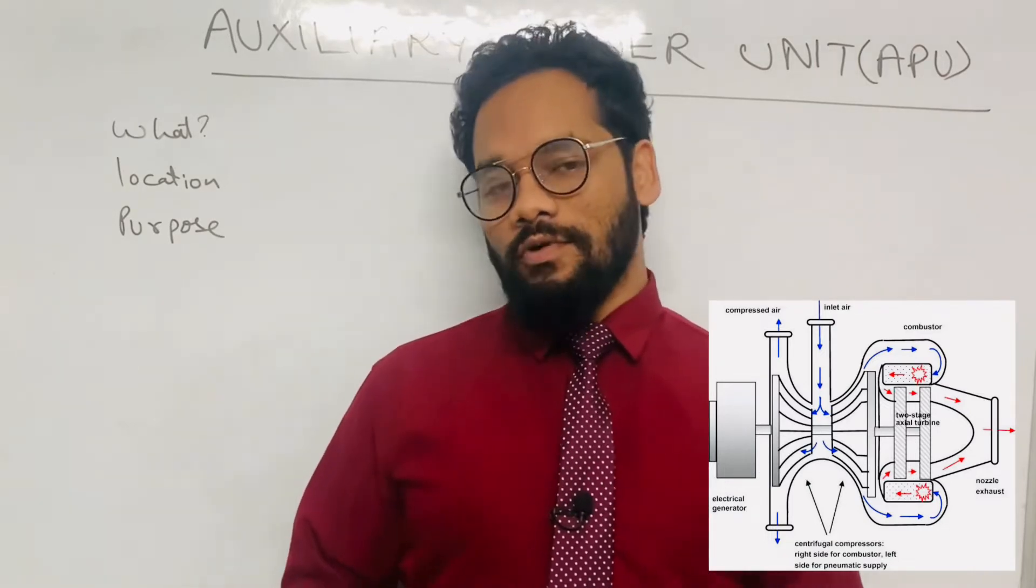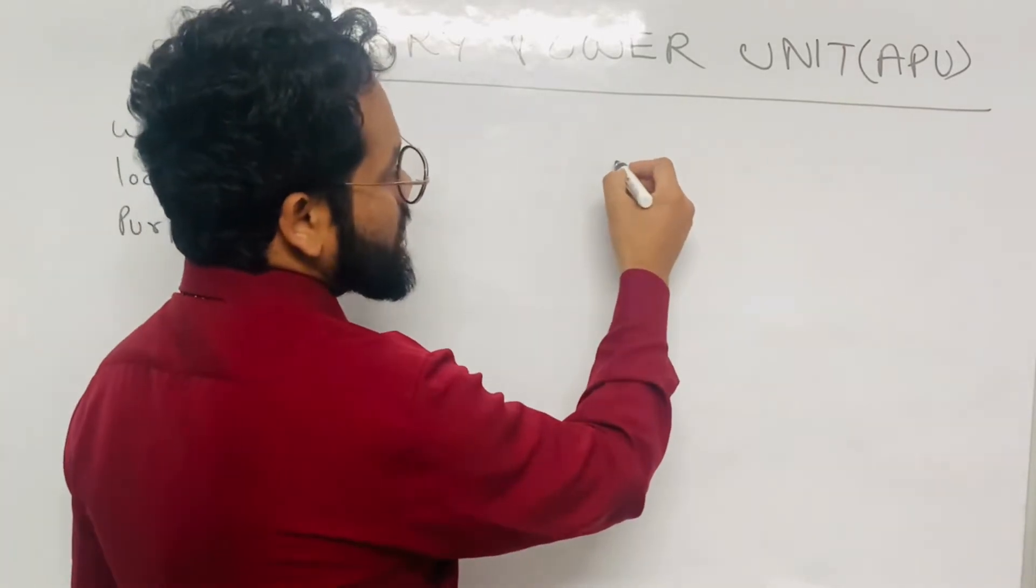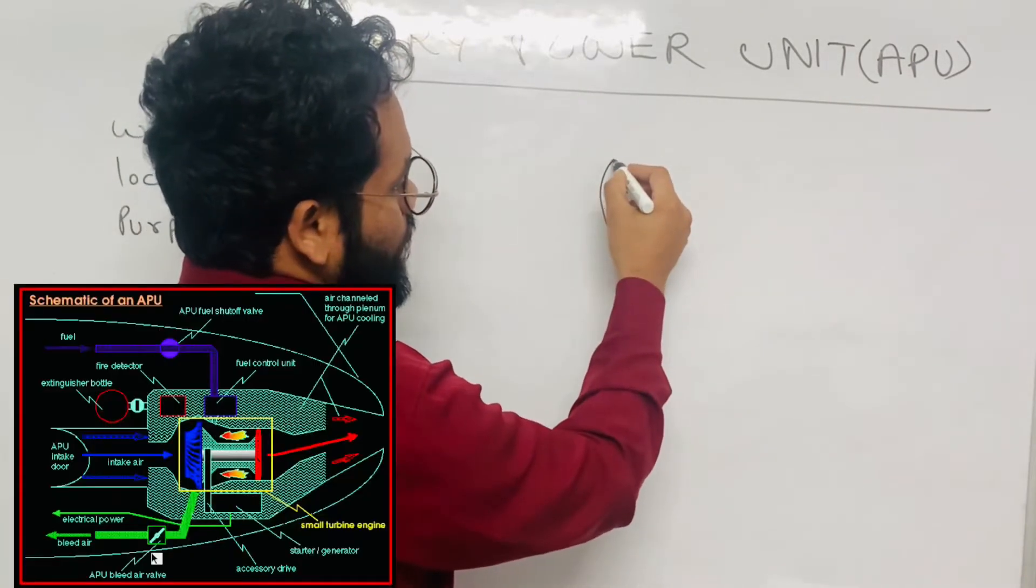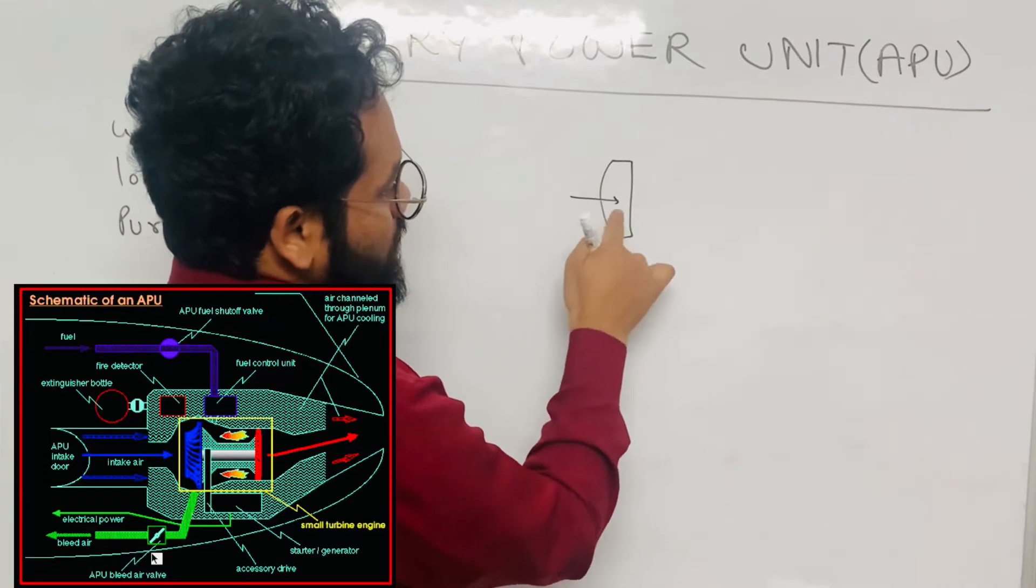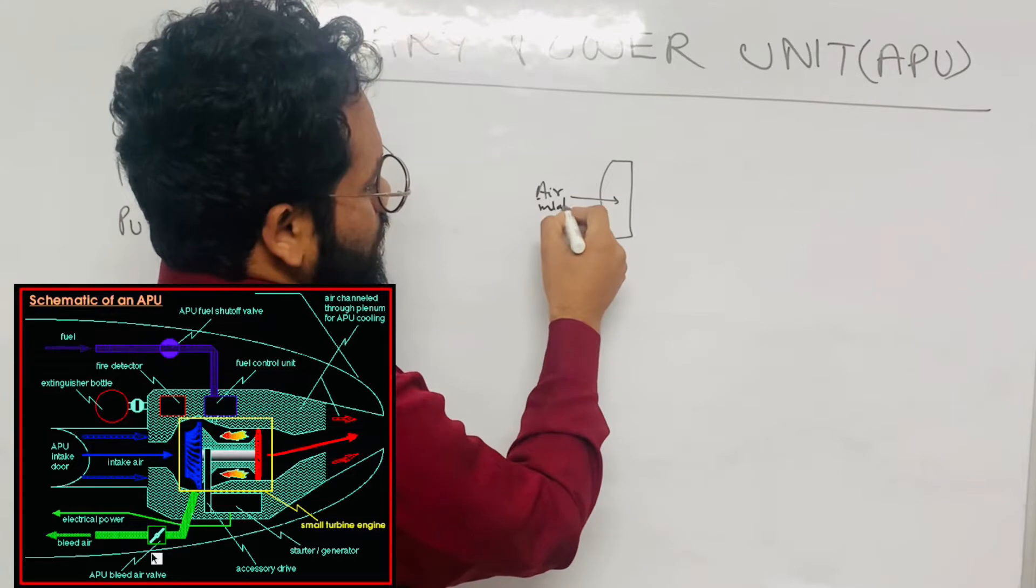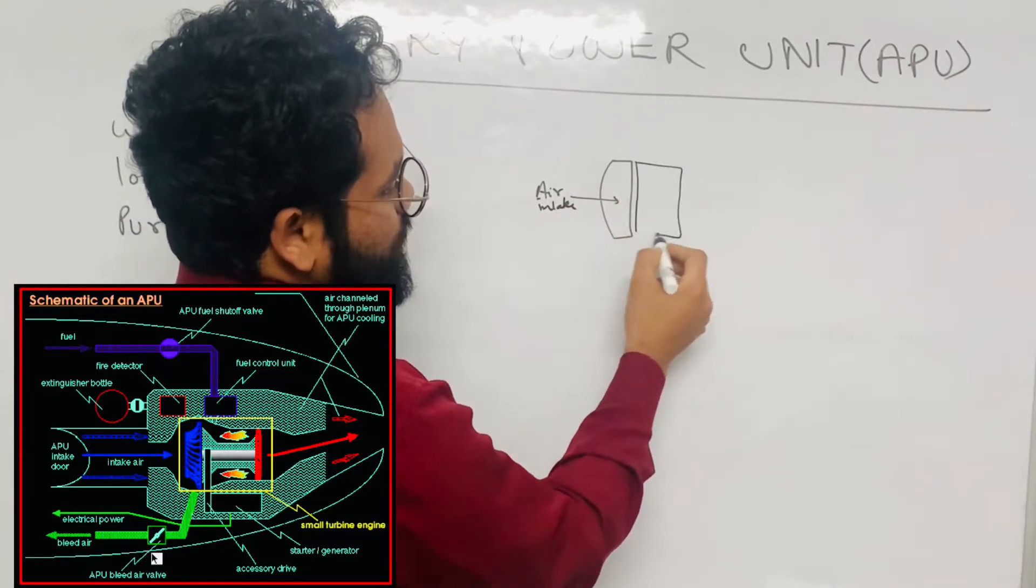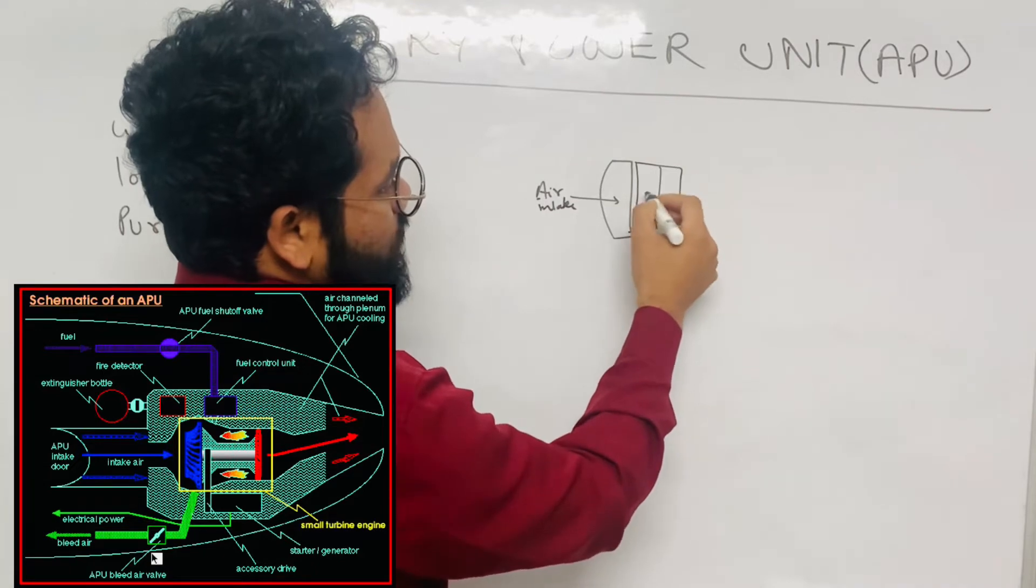Now let's discuss what are the stages in the APU. Suppose this is the intake of the APU, okay, this is the intake from where the air will enter inside the APU engine. Next, the next stage after intake is compressor, so the compressor is of two stages.